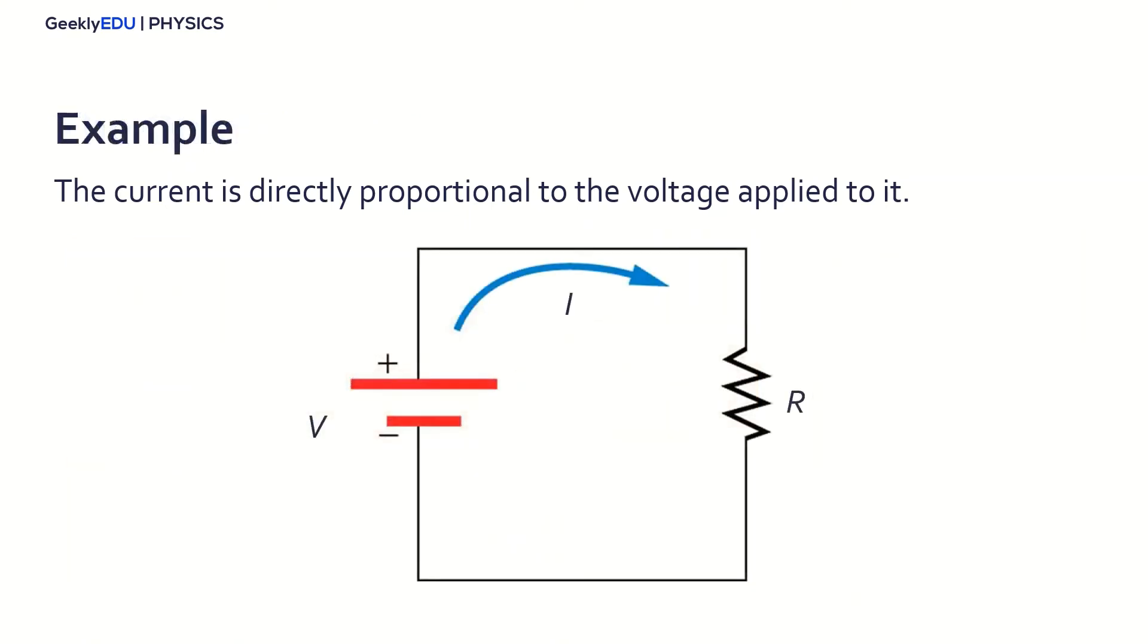Ohm is the unit of the resistance. Alright, now let's apply this concept, Ohm's Law, into a simple circuit like this. Imagine this is a flashlight circuit. So the light bulb is the resistance. We have the batteries here, and of course, an electric current going through this circuit here.